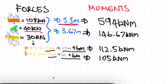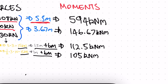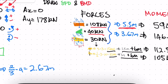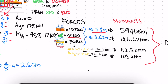The total moment is the sum of all contributions: 594 + 146.67 + 112.5 + 105 = 958.17 kN·m. Therefore, MA = 958.17 kN·m. That concludes the first video solving the reactions for this cantilever beam.